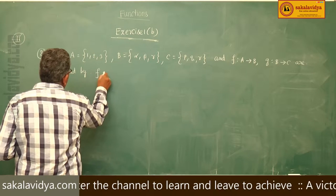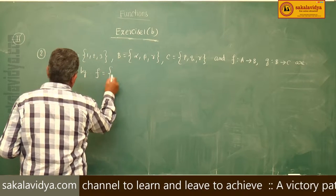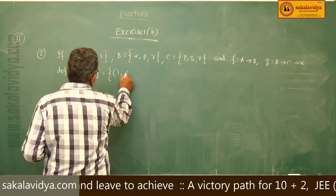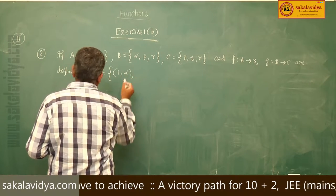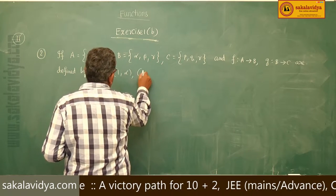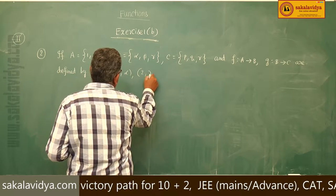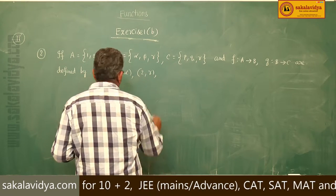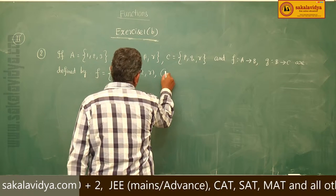F is equal to {(1, gamma), (2, gamma), (3, gamma)}.